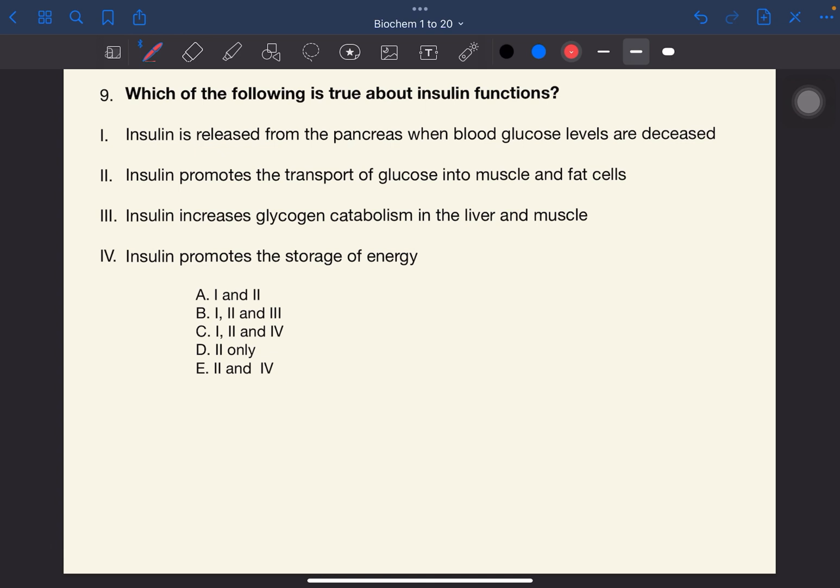Which of the following is true about insulin functions? For statement one, insulin is released from the pancreas when blood glucose levels are decreased. So this is wrong. Insulin is released from the pancreas, specifically the beta cells. However, they are released when blood glucose levels are elevated. Take note that insulin is released when you are fed.